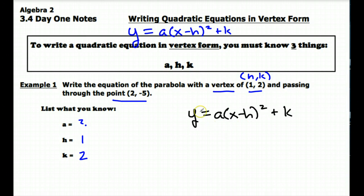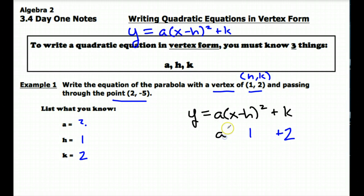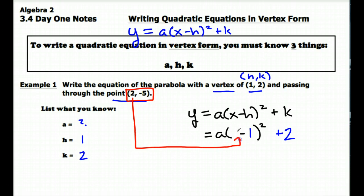We're going to plug into this form what we know. We know h is 1, so we have a 1 here, and our k value is 2, so we'll have plus 2. What I don't know is my a value, but I do know an x and a y value. I'm going to plug in values for x and y from the point (2, -5) that we're given. So I take the x coordinate 2 and plug it in for x, and the y coordinate -5 for y. So we have the equation: negative five equals a times the quantity (2 minus 1) squared plus 2.